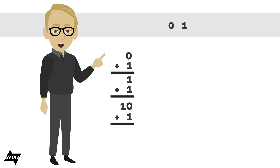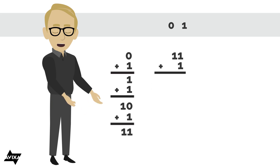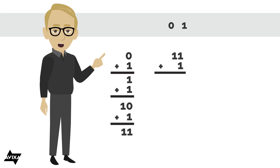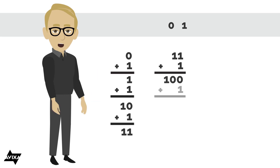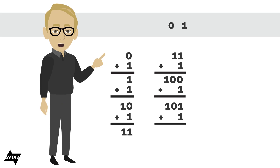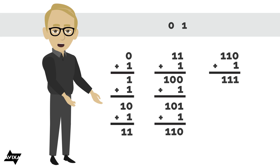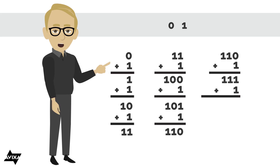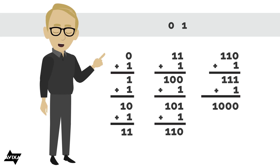I add 1 to that, that gives me 1, 1. I add 1 to 1, 1, and again, I don't have any more symbols, so we add another place, and we have 1, 0, 0. I add 1 to that, and I get 1, 0, 1. Add 1 to that, that gives me 1, 1, 0. 1 to that gives me 1, 1, 1, and 1 to that would be 1, 0, 0, 0.